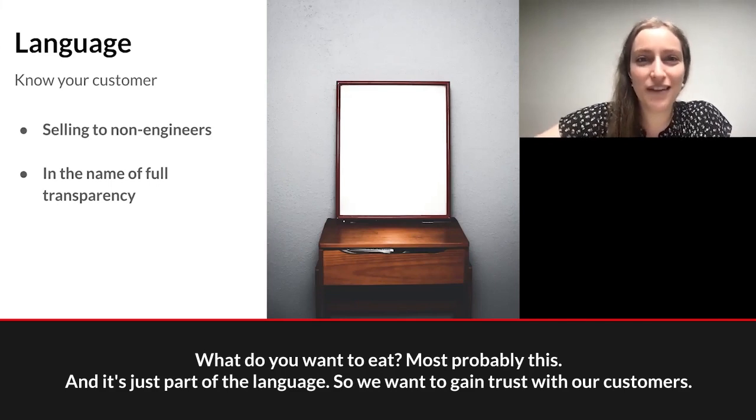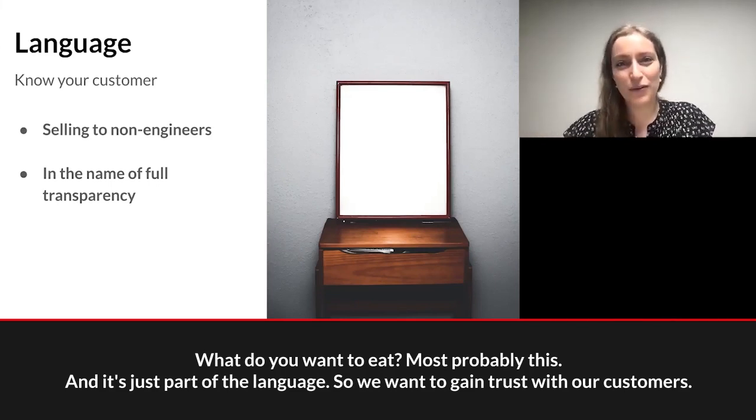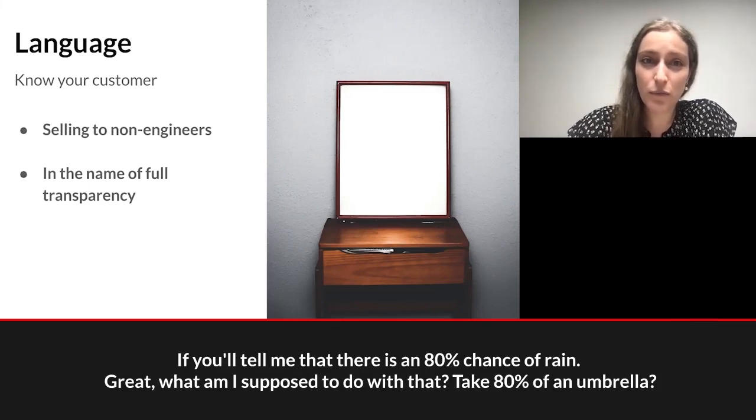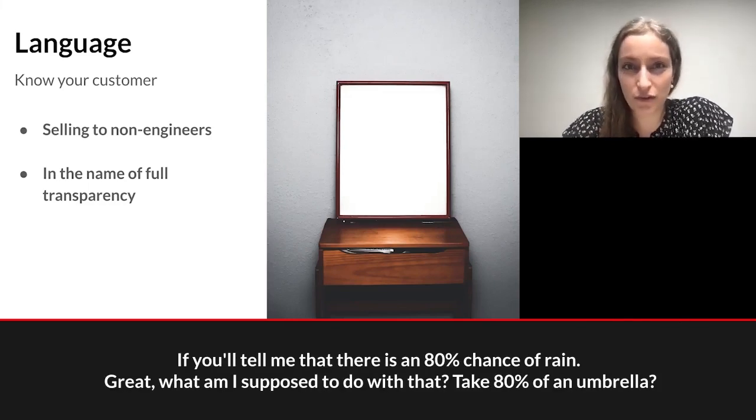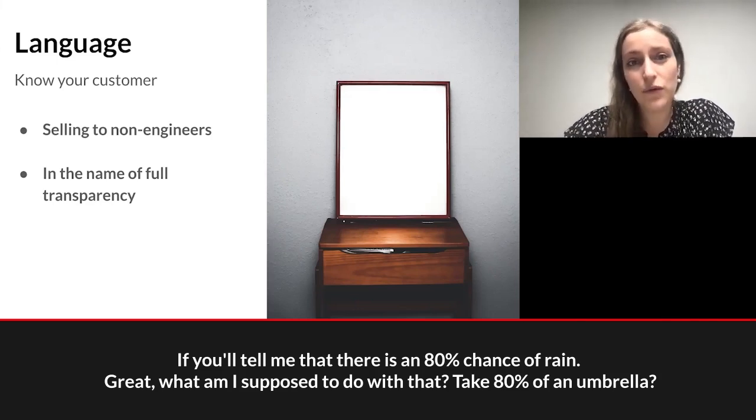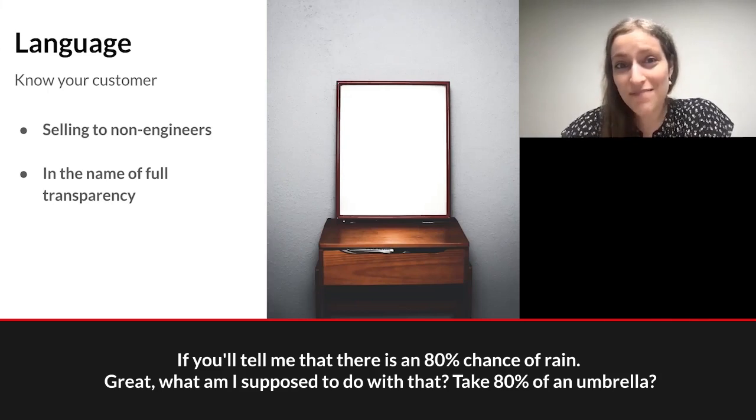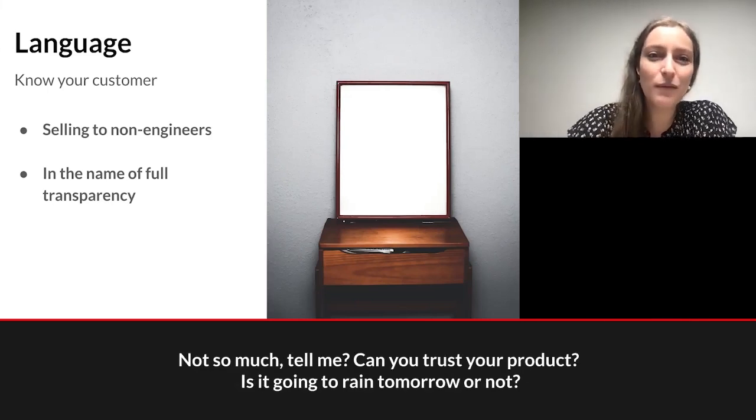It's just part of the language. So we want to gain trust with our customers and give them the whole picture, but sometimes we just overdo it. It's also important because, if I'm doing weather predictions for example, as a customer I want to know if it's going to rain or not. If you tell me there's an 80% chance of rain, great - what am I supposed to do with that? Take 80% of an umbrella? Tell me: can you trust your product? Is it going to rain tomorrow or not?